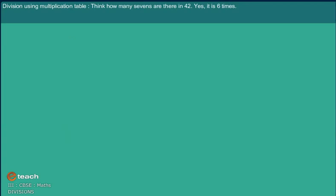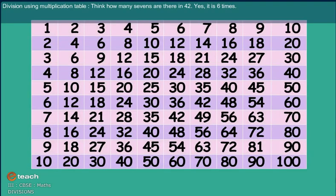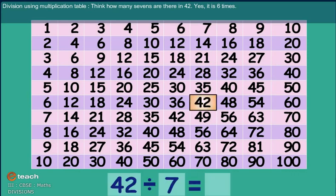We use multiplication tables to divide. Think, how many 7s in 42? Yes, it is 6 times.